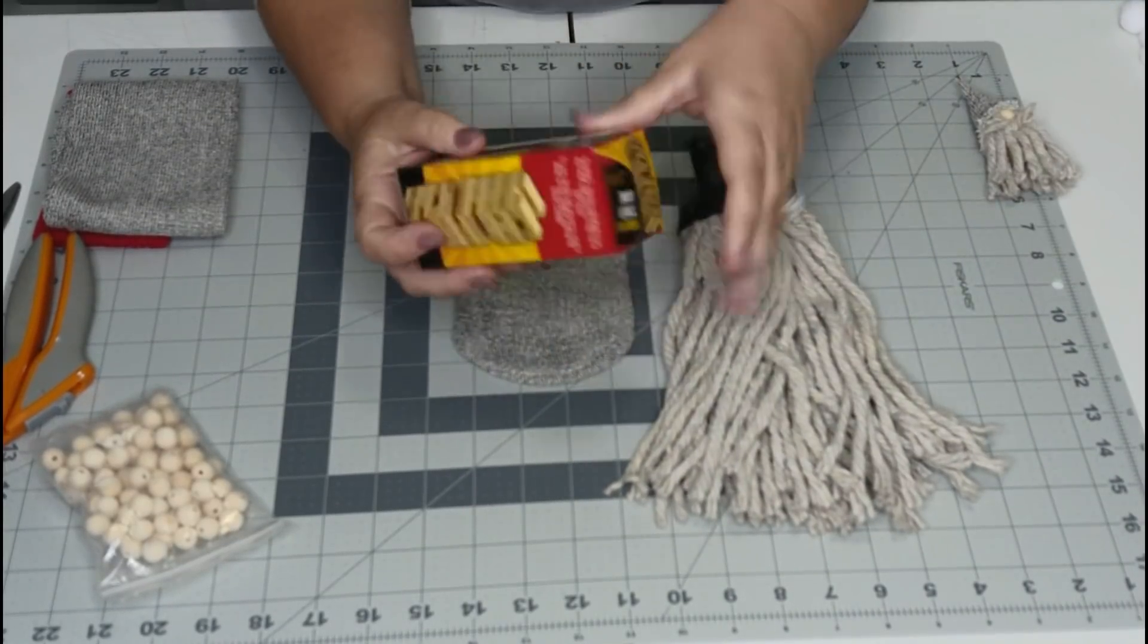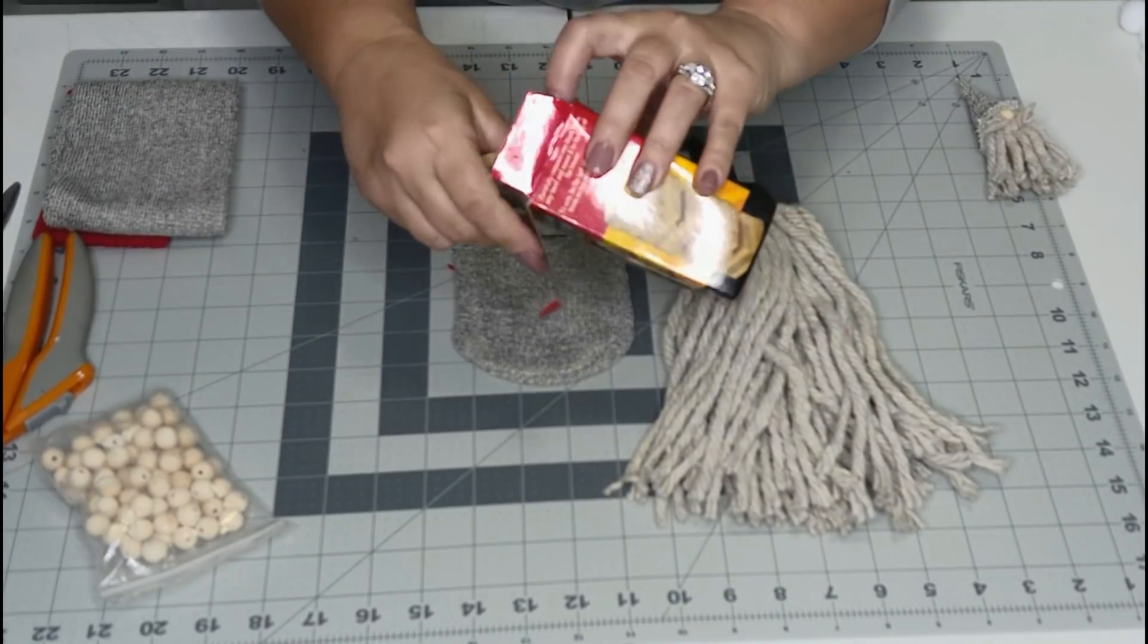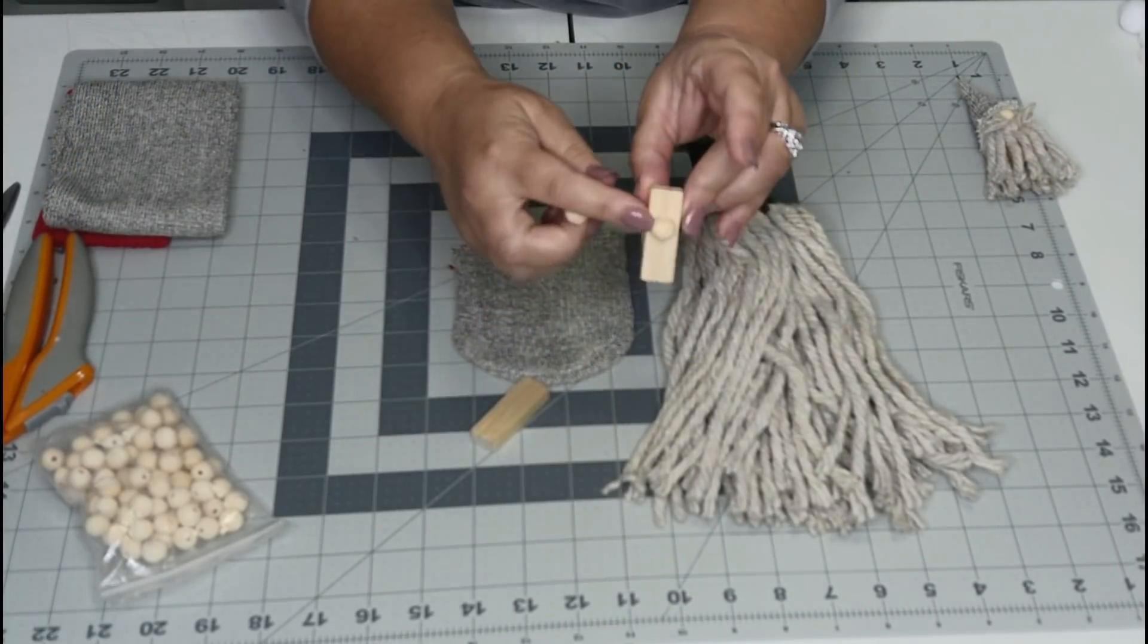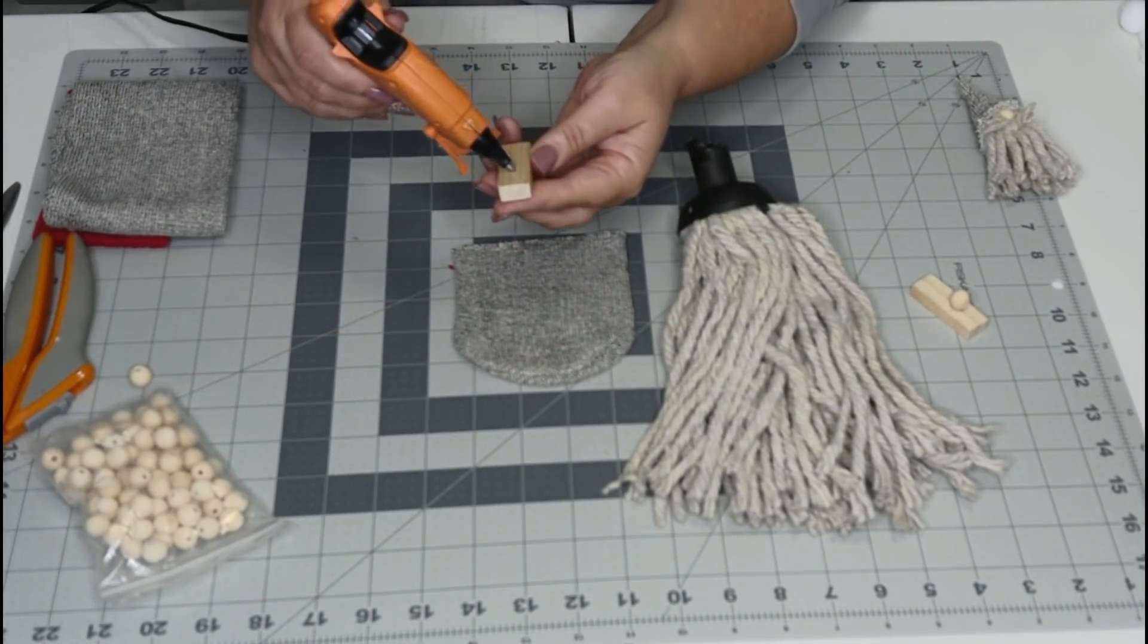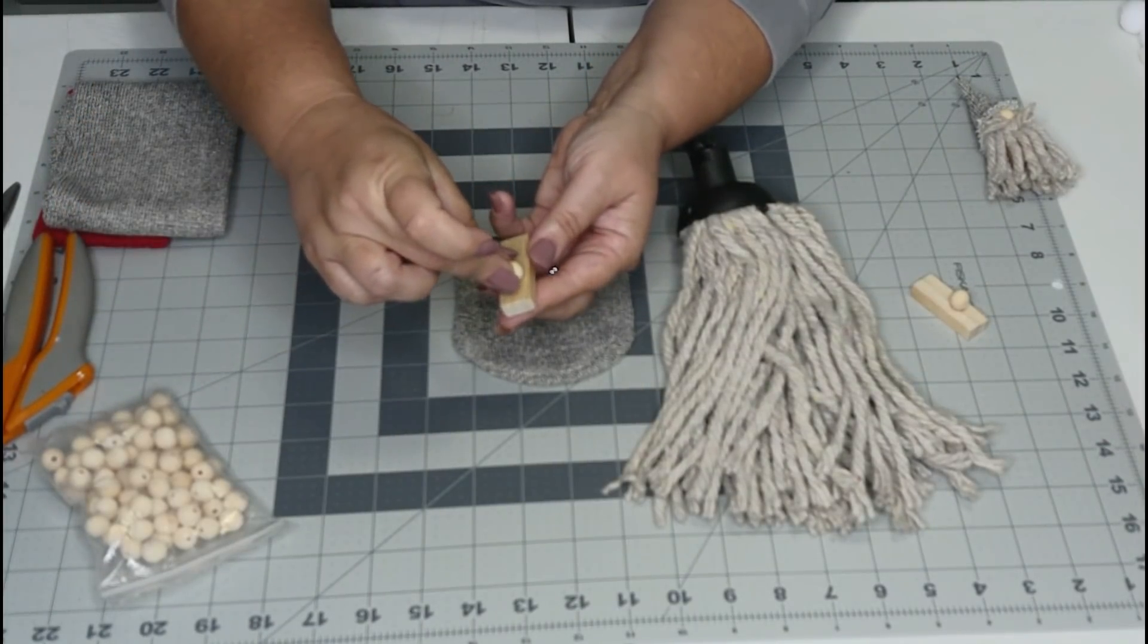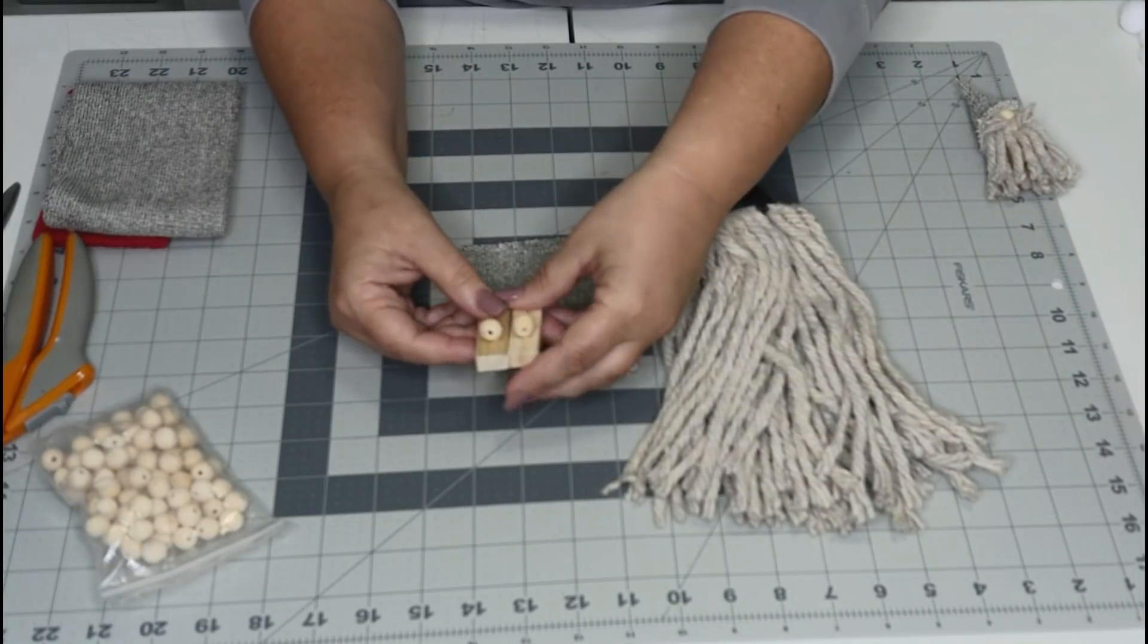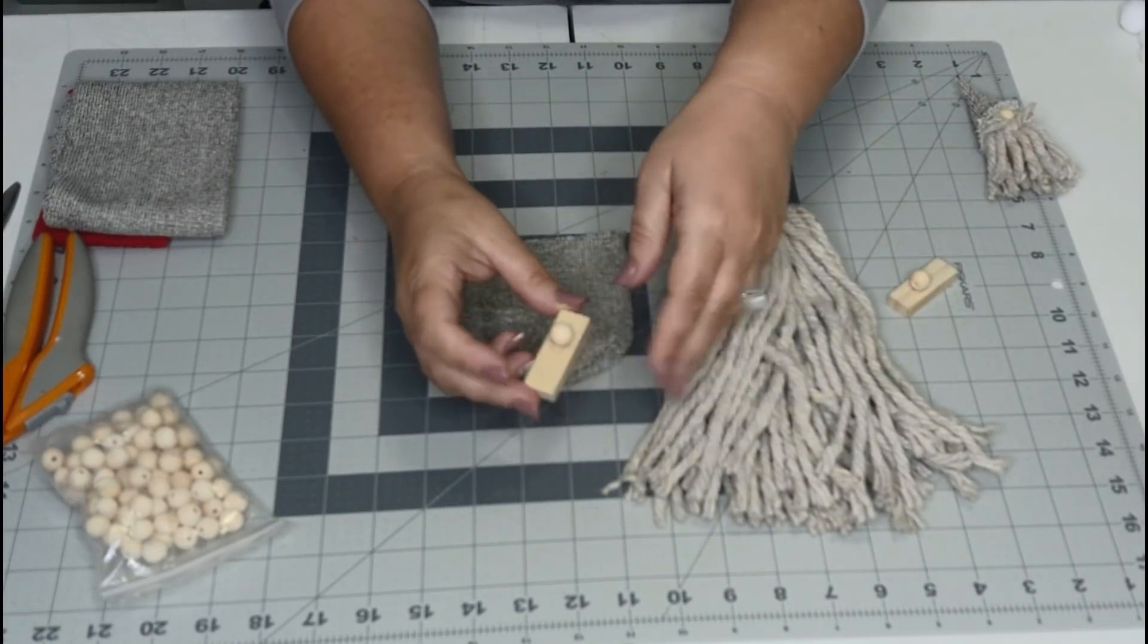Okay, so the first thing that we want to do is to take out some of our blocks. We're going to take just one of our little Jenga blocks and one of our little wooden beads and we're going to just glue that straight on to the front here. Just trying to get it as much in the center as you can. I came down probably maybe half an inch from the top of the block.